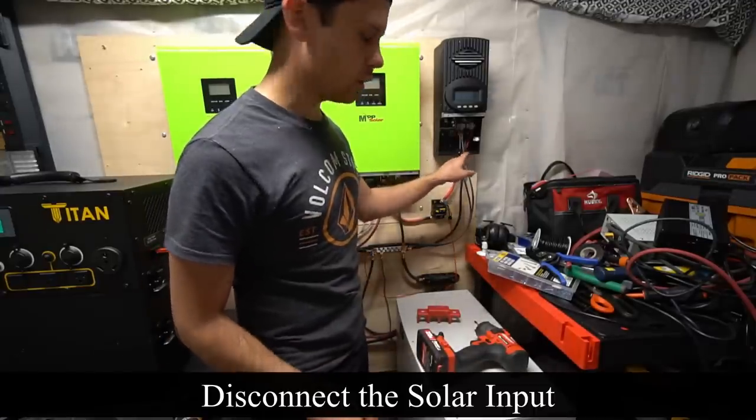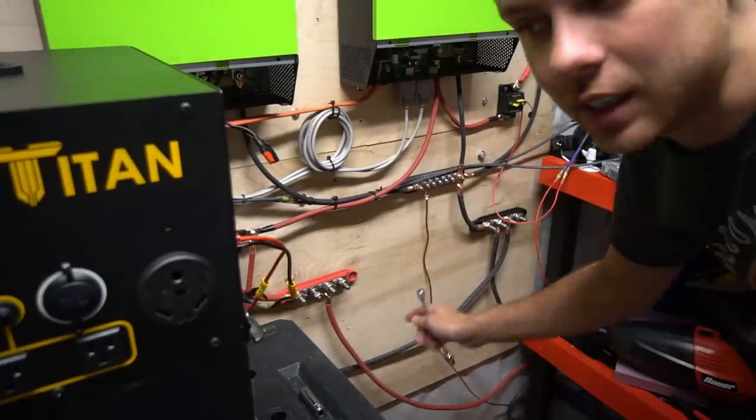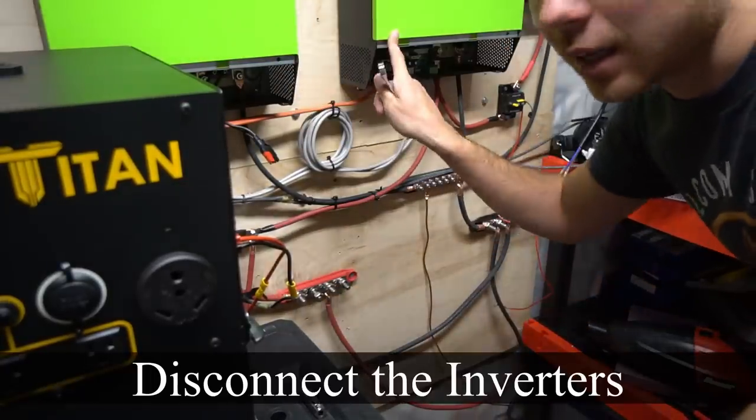So first we're going to disconnect the solar input, then we're going to disconnect the batteries from the inverters. Now the batteries are disconnected and I can safely disconnect the inverters.